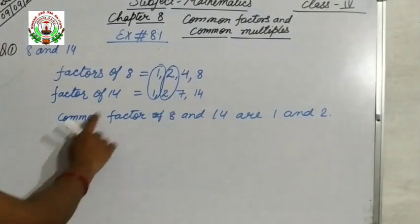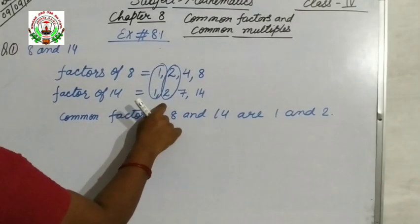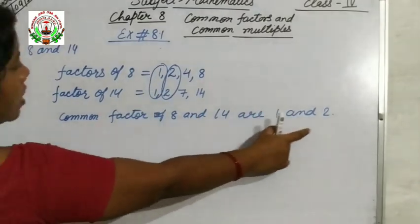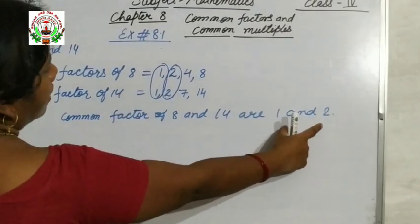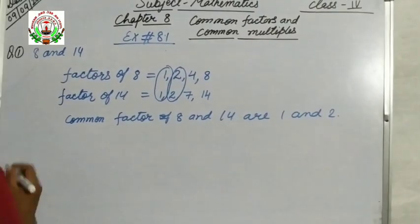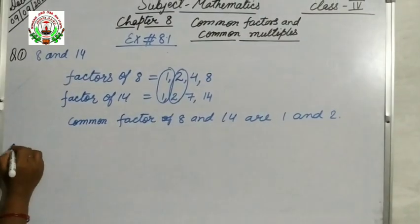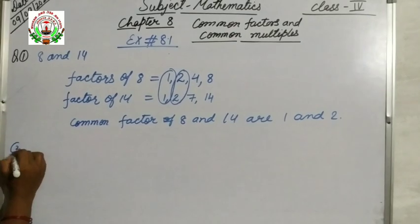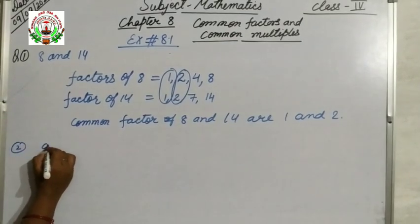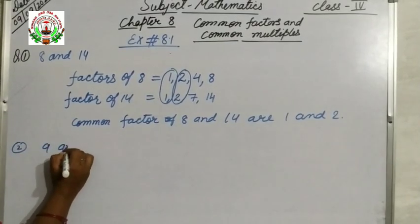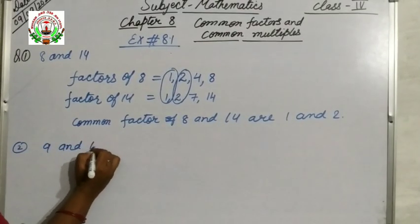Common means the same factor that appears in both numbers is what you write in the answer. Now in question number 2: 9 and 15.